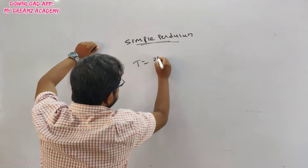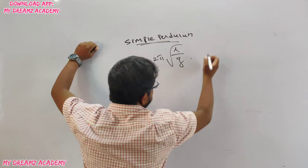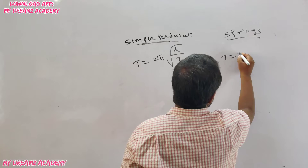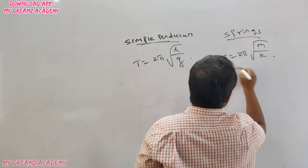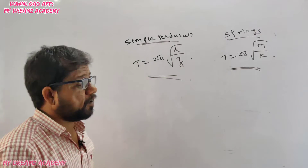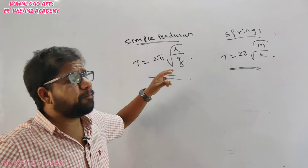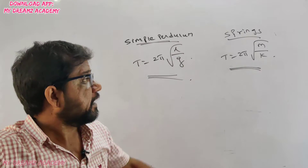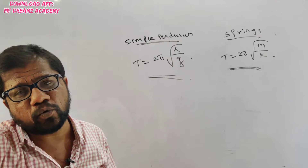There are two types of pendulum clocks. For a simple pendulum, the time period formula is T = 2π√(l/g). For springs, the time period formula is T = 2π√(m/k).